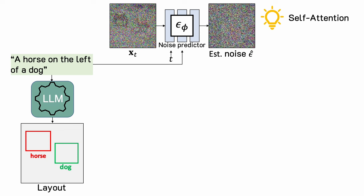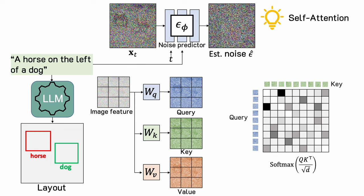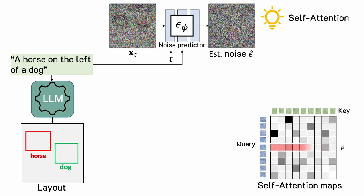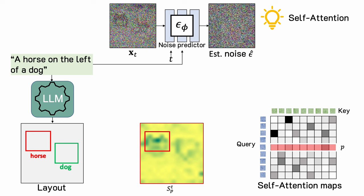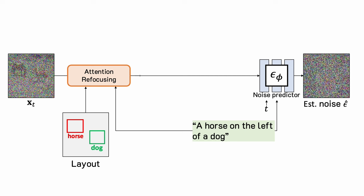We can apply a similar approach to self attention layers in the noise prediction network. Self attention layers extract query, key, and values from the image tokens, then compute attention maps to model the dependency and relationships within the image. Here is the self attention map visualization for query position p within the bounding box for the horse. We add a loss that penalizes the attention weights for regions outside the box to avoid object mixing. In summary, we use a spatial layout to guide the sampling process for accurate cross attention and self attention maps — we call this attention refocusing.